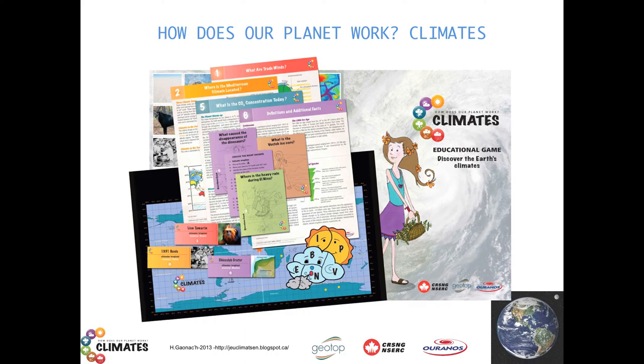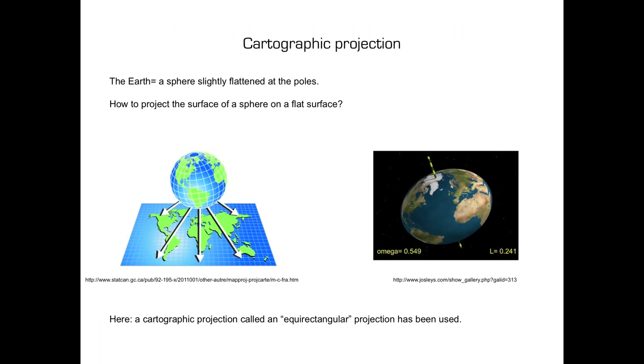Here is Hélène Gowanac. The Earth is a sphere that is slightly flattened at the poles. Making a graphic representation of the Earth leads to the following question: how to project the surface of a sphere on a flat surface.